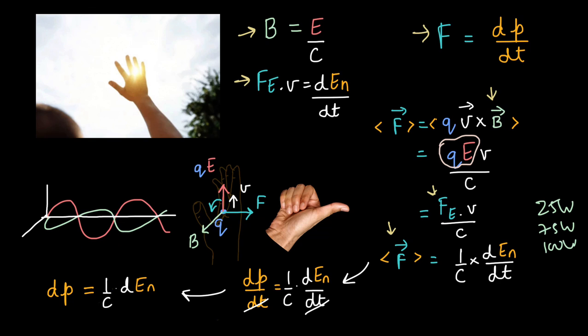And a relation that you will commonly see in textbooks will look like this. The momentum of light that is equal to the energy of light divided by C.